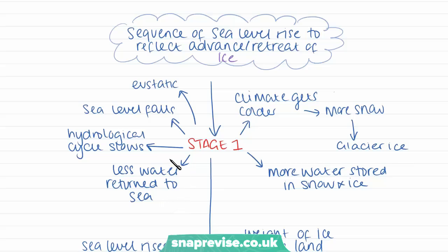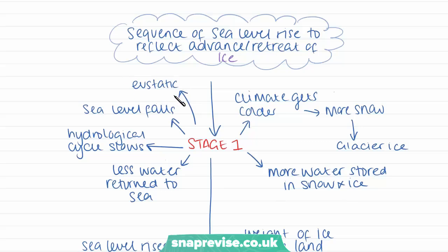So sea level is going to fall. The hydrological cycle brings water from the sea and rains it on land, but less water is returned to the oceans because it becomes stuck within the glaciers. This is what we call eustatic sea level fall, because the actual level of the water in the seas is falling.